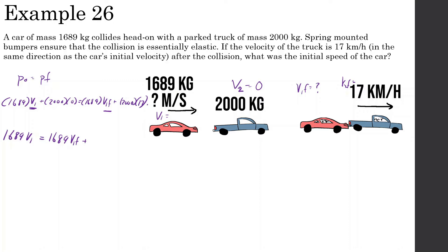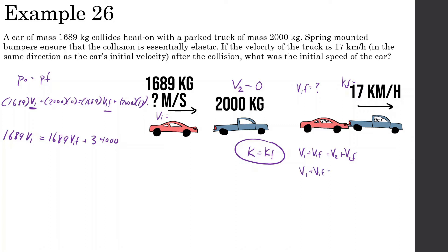2000 times 17 gives 34,000. Now, one key thing to know — and this is only for elastic collisions — kinetic energy is conserved. Because of that, we can derive a formula: V1 + V1_final = V2 + V2_final. This is not on your formula sheet usually, but we should be able to derive it. We don't know V1 or V1_final, but V2 = 0 and V2_final = 17, so V1_final = 17 − V1.